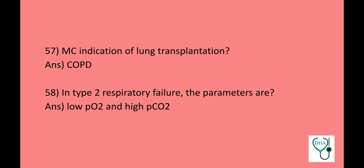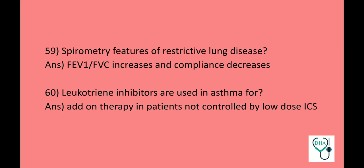In type 2 respiratory failure, the parameters are low PO2 and high PCO2. Spirometry features of restrictive lung disease: FEV1/FVC ratio increases and compliance decreases. Leukotriene inhibitors are used in asthma as add-on therapy in patients not controlled by inhalational corticosteroids.